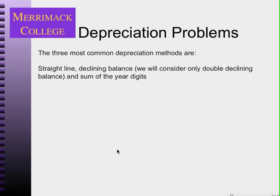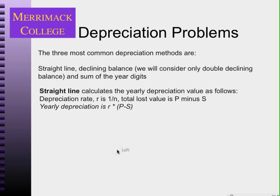The straight line method calculates the yearly depreciation value by using a straight line from initial cost to salvage value. The depreciation rate is just 1 over n, the number of years of design life. The total loss value is the present worth minus the salvage value. So the yearly depreciation is the rate (1/n) times the total loss value, or current worth minus salvage value.